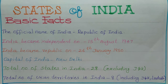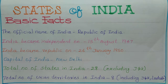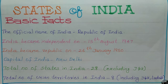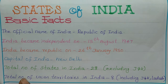Dadra Nagar Haveli and Daman and Diu both joined together to form 1 Union Territory, so the total became 8. Before it was 7, and with the addition of Jammu and Kashmir and Ladakh as separate Union Territories, it became 8.